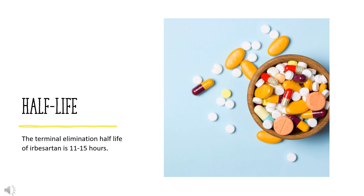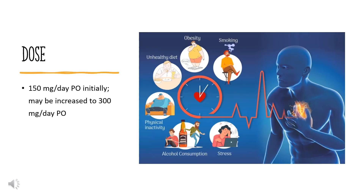Half-life: The terminal elimination half-life of Irbesartan is 11–15 hours. Dosing will be different for different patients. For hypertension: 150 mg per day orally initially, may be increased to 300 mg per day orally. For hypovolemia: 75 mg per day orally initially. For nephropathy in type 2 diabetes: 75–300 mg per day orally.